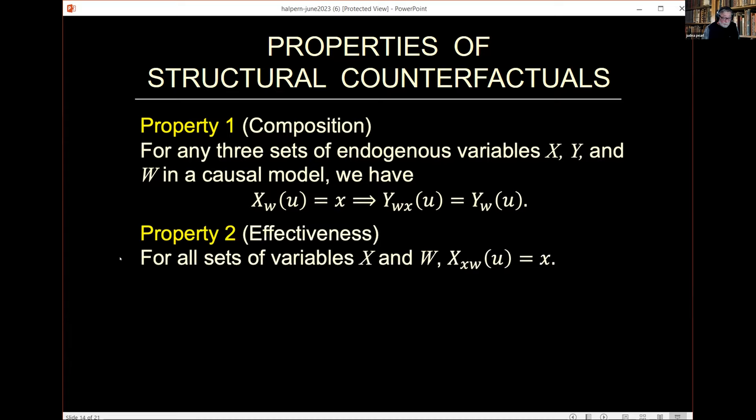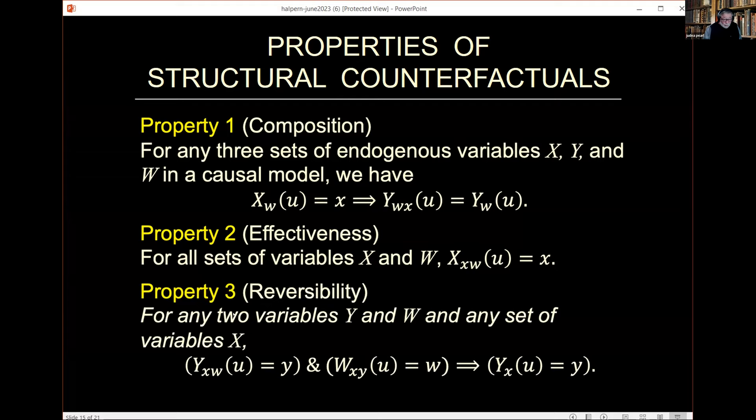There's another property, effectivity, which is simply technical. It says if you force a variable to value X, then it attains that value. It's just a technical one to enable the proof to go through. And there's a third property, which Joe discovered, which is important only when you have feedback systems. It simply said that you don't have any memory, that you have a unique solution for X and Y if you start with a certain U. For every U, you have a unique value for X and Y, so you don't have positive feedback and all kinds of strange phenomena under a feedback system.